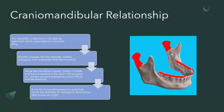The relationship between the mandible and cranium is quite unique and no other bone in our body has this kind of relationship. The mandible is attached to the skull with the help of ligaments and is suspended in a muscular sling. Elevator muscles like the masseter, medial pterygoid, and temporalis — these are three of the four sets of muscles we call the muscles of mastication, and these are the elevator muscles. They are called elevator muscles because they raise the mandible.